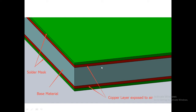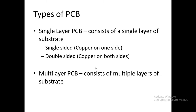The thickness of the base material varies in a wide range and we will discuss it in the coming slide. Now, types of PCB. Basically, there are two types of PCBs. This is a single layer PCB which consists of a single layer of the substrate. In single layer PCB, we may have single sided PCB — that is, copper is only on one side — or double sided, that is, copper on both sides of the PCB.